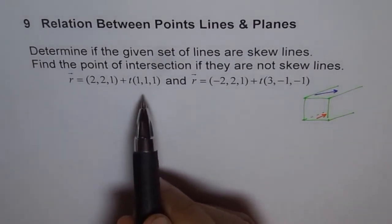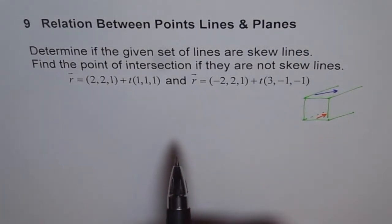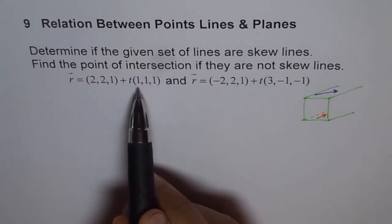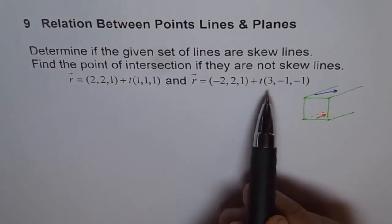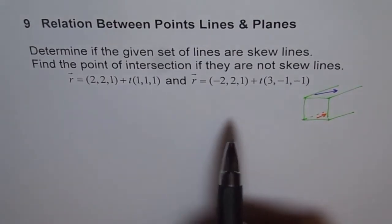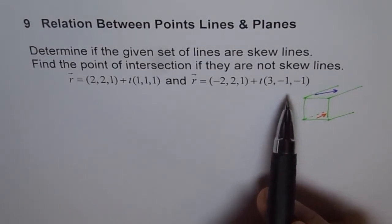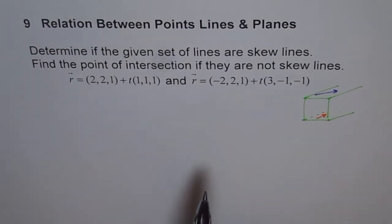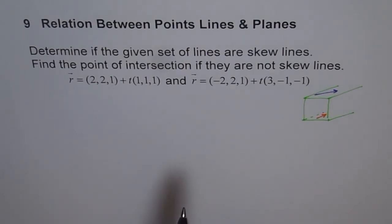We have two vector equations of lines, and you can compare the direction vectors: (1, 1, 1) and (3, −1, −1). They are not scalar multiples, and therefore they are not parallel. So these lines will intersect — unless they are in parallel planes, or they are skew lines.